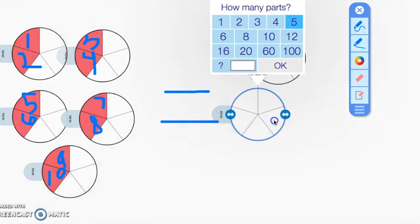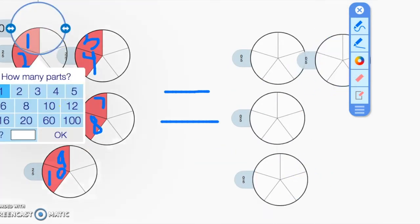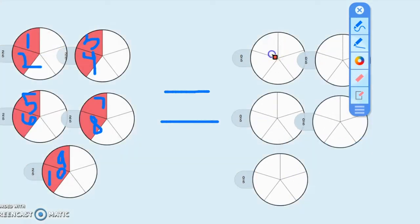Another way to show ten-fifths is we will draw the five cups again and shade in the ten parts, which completely fills two cups.